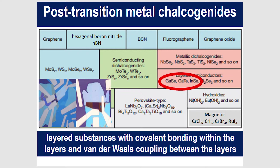Graphene kicked it all off around 15 years ago with its isolation in 2004, and since then there has been quite an explosion of various different 2D materials with certain properties — starting with graphene-type, then semiconducting MoS2 and so on. I'll be focusing today on the layered III-VI semiconductors, particularly indium selenide.